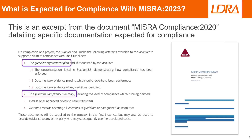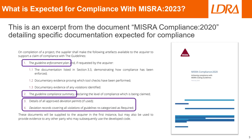The second piece of documentation that we'll need is a guideline compliance summary. This is going to declare the level of compliance that we are claiming with MISRA — specifically which guidelines are compliant and how much compliance we are claiming, whether that's 50%, 80%, or 100% compliance. The third piece we need to provide is deviation records and any deviation permits, which also includes the fourth thing we'll need: whether or not we have recategorized any of our guidelines in a guideline recategorization plan.